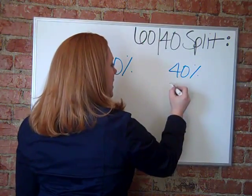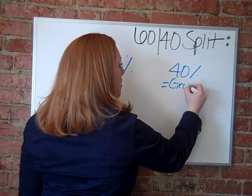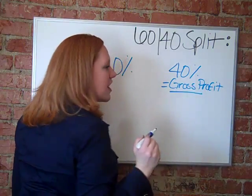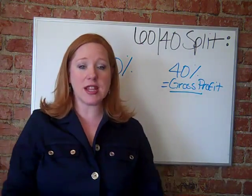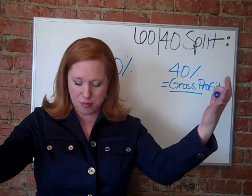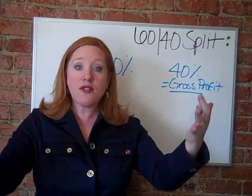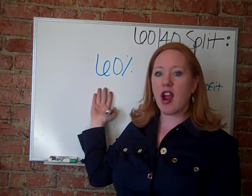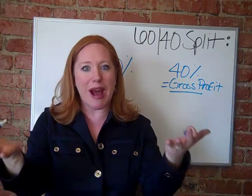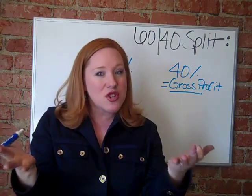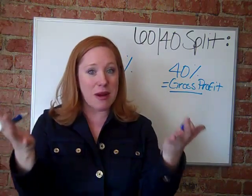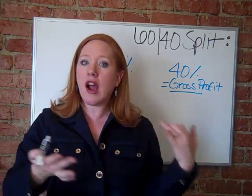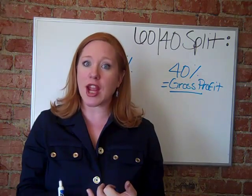The 40% is gross profit. Gross profit is a big pile of profit, so to speak. It means that all of your business expenses — the 60% — have already been taken care of, and this is what you have left over. But I don't want you to think that that is the money that you get to take home to your family, because you're in business and you're going to have other business expenses that you may incur.